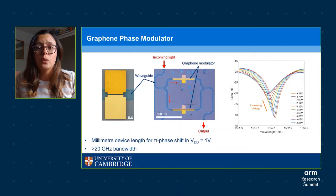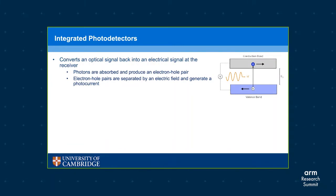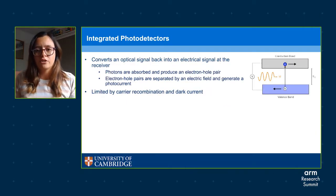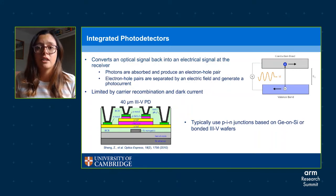Moving on to photodetectors, which typically use semiconductors to convert a stream of photons into a photocurrent. Photons are absorbed if their energy is greater than the band gap, and the generated electron-hole pairs are separated by an electric field to produce a photocurrent. Performance is reduced by carrier recombination before collection or by dark current which adds noise. Due to silicon's band gap, new materials with a smaller band gap are needed for photodetection in silicon photonics — typically based on epitaxially grown germanium on silicon or bonded III-V wafers, which are costly, complex to integrate, and have a limited operating range.